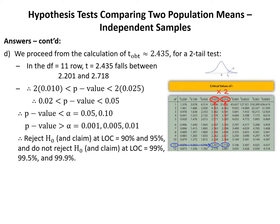In Part D, proceeding from t obtained equals 2.435 for a two-tail test, we look in the DF equals 11 row of the t-table. Our obtained value falls between 2.201 and 2.718, corresponding to tail areas of 0.010 and 0.025. Multiplying by 2 for the two-tail test, the p-value is between 0.02 and 0.05. Therefore, we reject H0 at alpha values of 0.05 and 0.10, and do not reject H0 at alpha values of 0.001, 0.005, and 0.01.